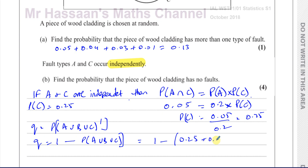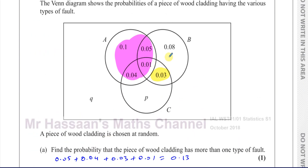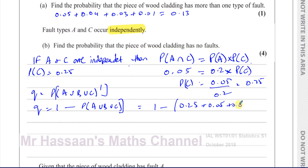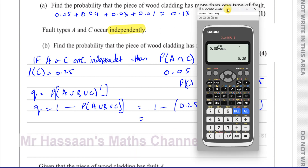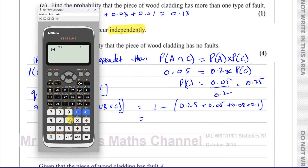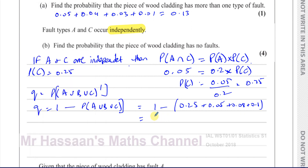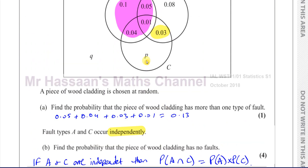So the probability of A union B union C includes 0.05, 0.08, and 0.1 added to the 0.25 already counted. That gives Q = 1 minus all of that. So it's 1 minus 0.25 plus 0.05 plus 0.08 plus 0.1, which gives us 13 over 25, which is 0.52. So Q = 0.52.